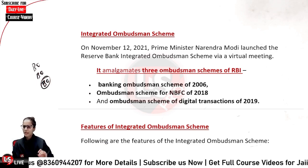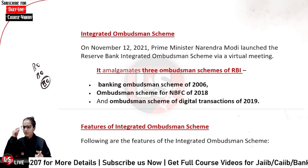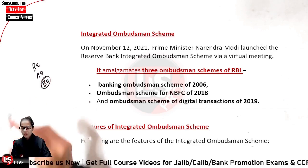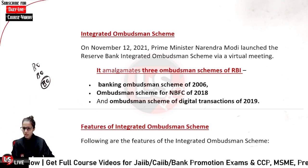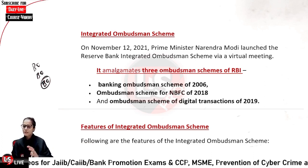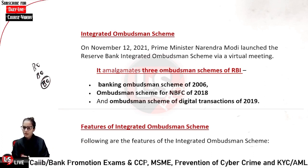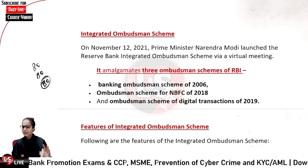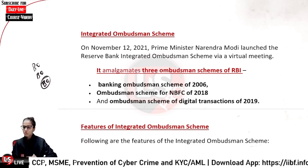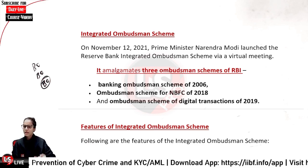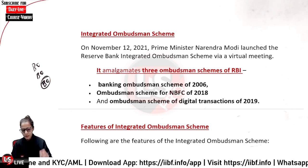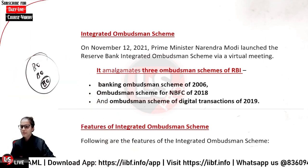So basically, what was the issue? The issue was identifying the correct jurisdiction — whether a deficiency in services was provided by a bank and which ombudsman's jurisdiction it fell under. To resolve this confusion, RBI launched the Integrated Ombudsman Scheme.